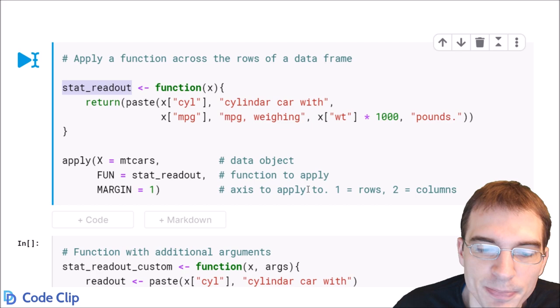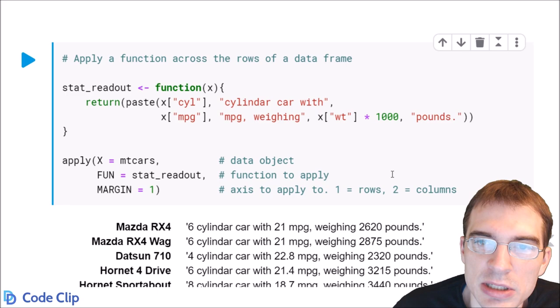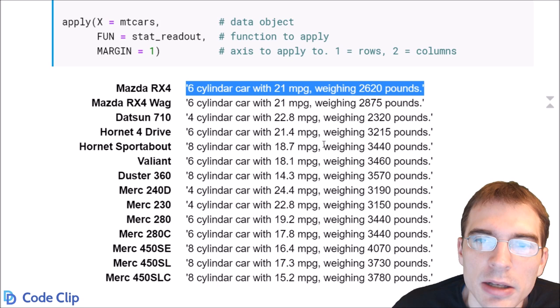And so we'll run that and see what the result is. You can see that for each row, which is a different car, we have a custom readout that was printed by our custom function.